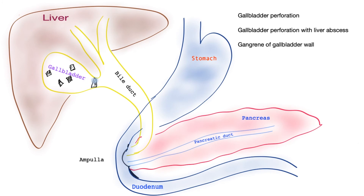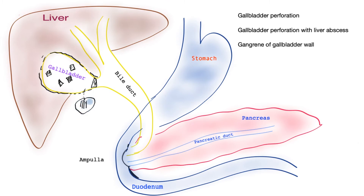When a stone blocks the gallbladder, pressure builds on the wall, which becomes thickened. A small part of the wall may lose its blood supply, weaken, and allow some contents to pour out — typically forming a collection or puddle next to the gallbladder. When this happens, an operation is usually indicated. Sometimes surgeons may drain the gallbladder and collection by inserting tubes from the skin. Rarely, the gallbladder can perforate towards and into the liver, giving rise to a liver abscess.